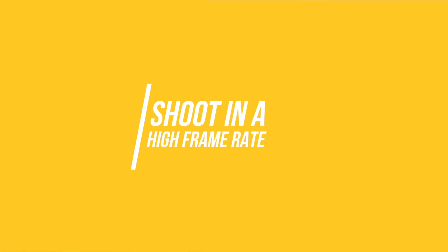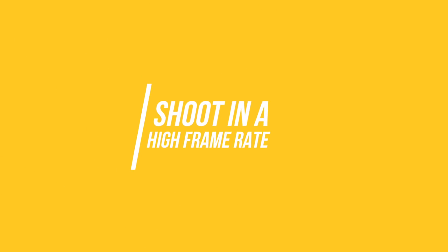Number two: you want your camera set to the highest frame rate possible. I shot my stories on the A7 III at either 120 frames per second or 60 frames per second. That gives you the most flexibility in post if you want to slow something down. Even if you don't, you can still play it back at 24 frames.